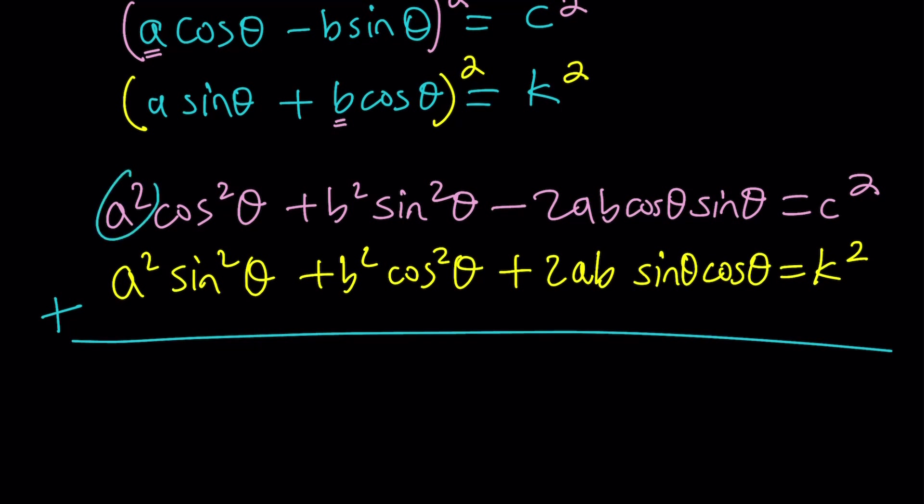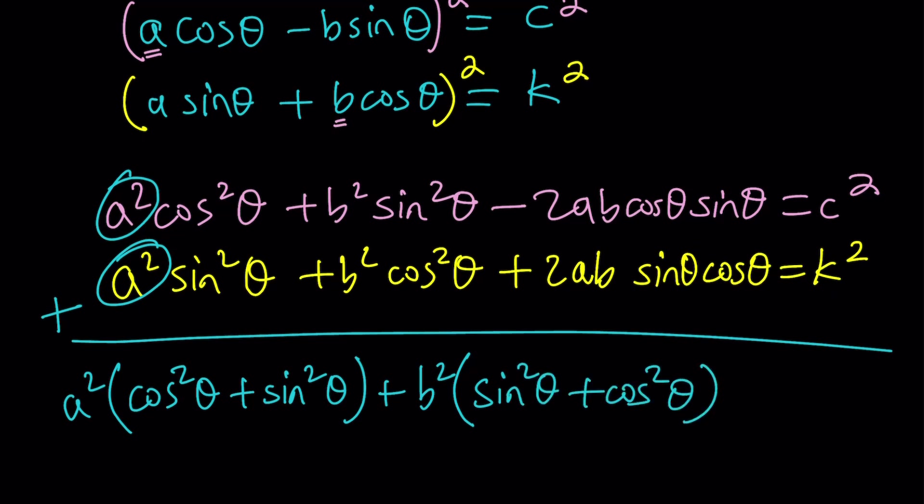Now, we're going to add a squared something and a squared something. So we can basically factor out a squared and write this as cosine squared theta plus sine squared theta. And notice that the b squared also nicely adds up. b squared times the quantity sine squared theta plus cosine squared theta. What happens to the two ab's? They're opposites, so they have to cancel out. And we end up with c squared plus k squared.